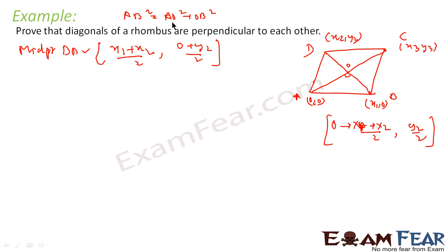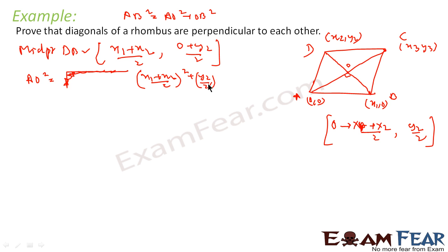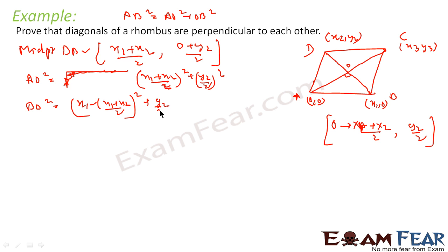Now I have to prove that AB² = AO² + OB². AO² — since A is (0,0) and O is ((x1+x2)/2, y2/2) — will be ((x1+x2)/2)² + (y2/2)². Similarly, BO² — since B is (x1, 0) and O is ((x1+x2)/2, y2/2) — will be (x1 − (x1+x2)/2)² + (y2/2)², which simplifies to ((x1−x2)/2)² + (y2/2)².